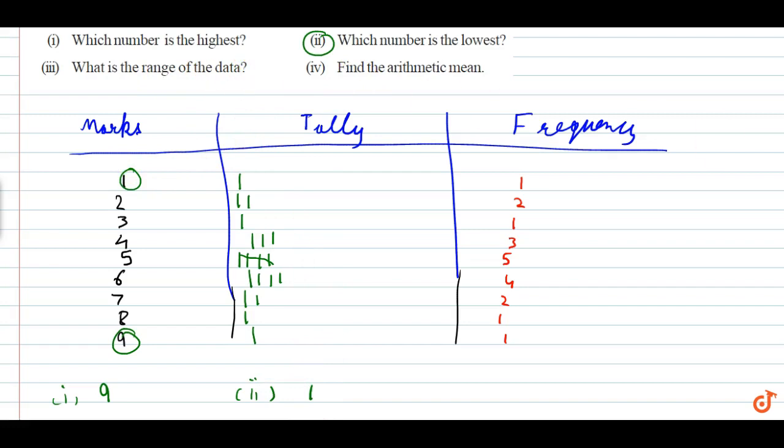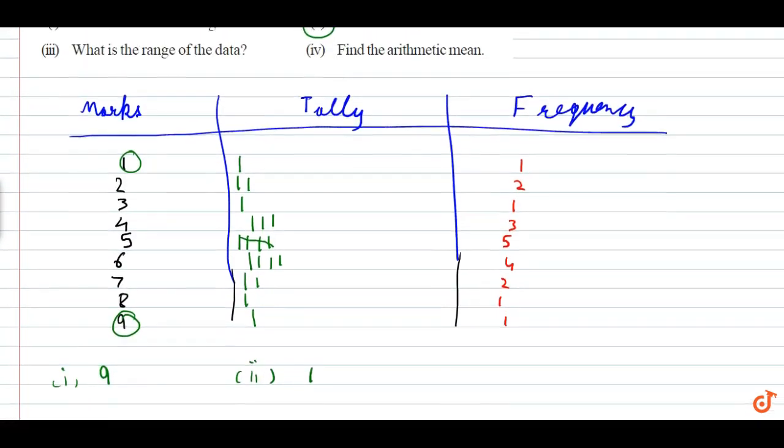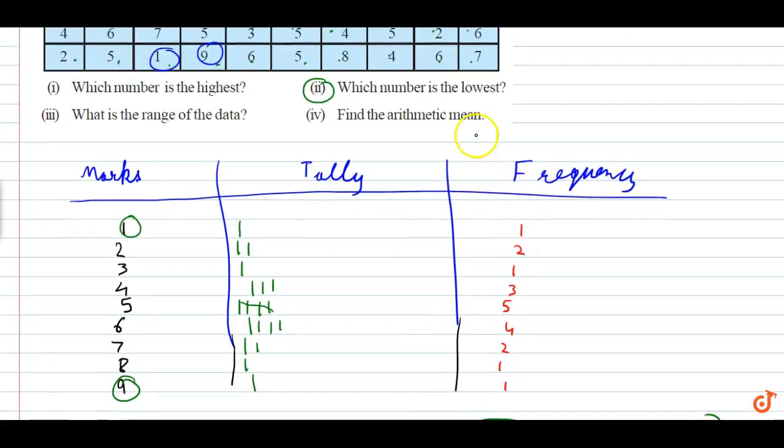What is the range of the data? Range is calculated as nine minus one, which equals eight.